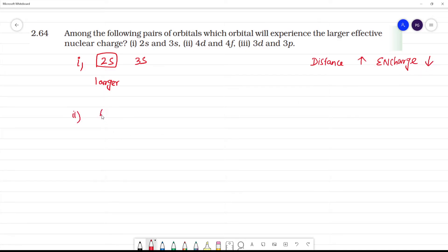Next, the second pair is 4d and 4f. This will be determined using the n plus l value. The l values are: l equals 0 for s, 1 for p, 2 for d, and 3 for f.